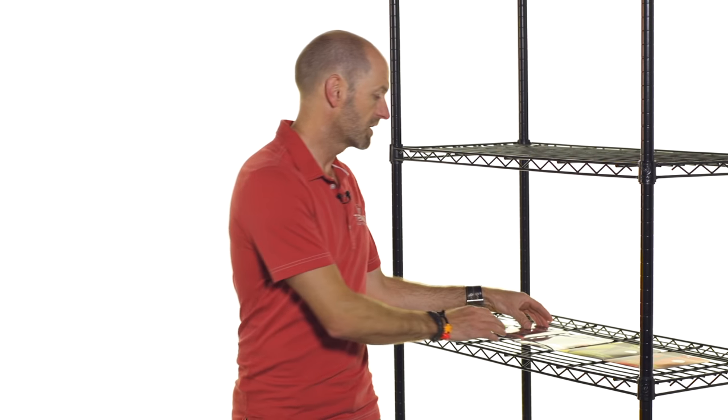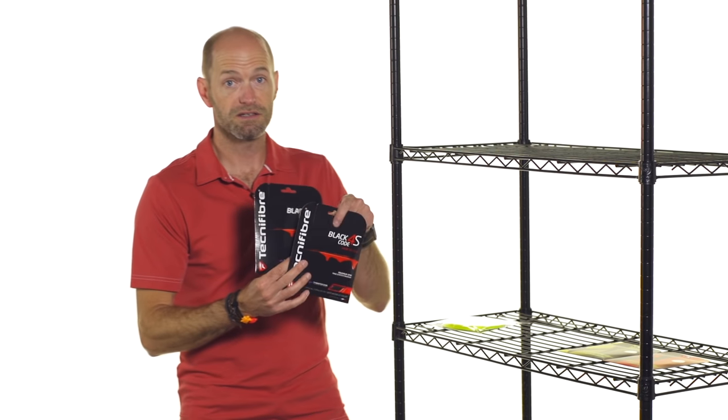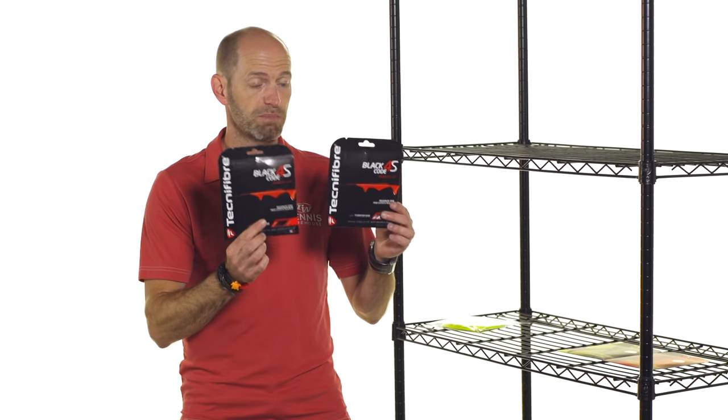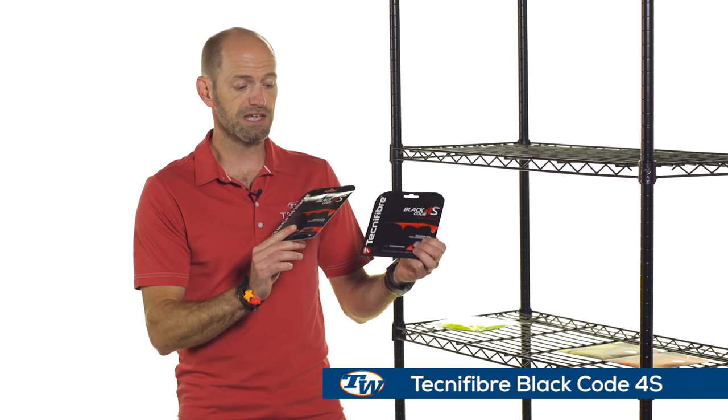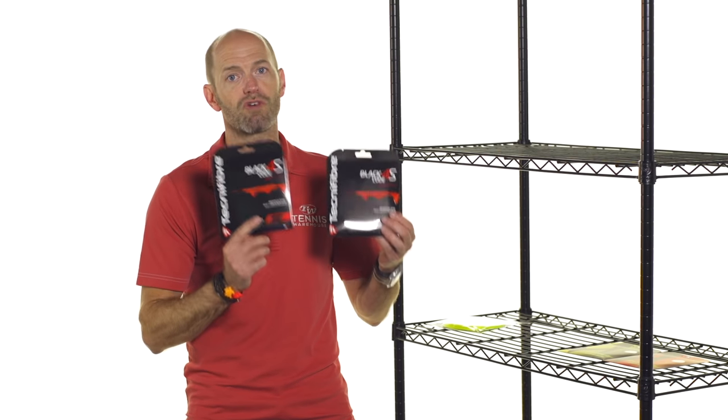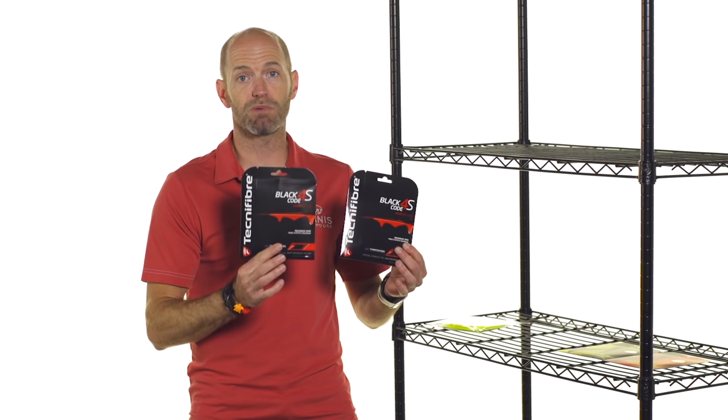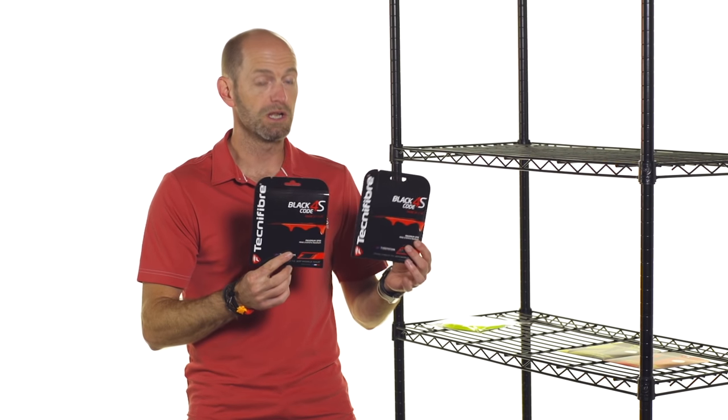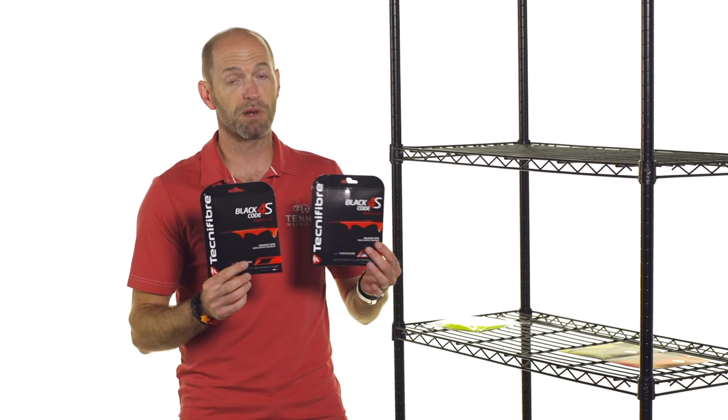Next up we've got two versions of Technofiber's Black Code 4S and these are the second and third place strings on our spin testing so far in the lab. The 17 gauge just edging out the 16 gauge for spin, but both of these strings offer great spin, great control, again nice firm response, really going to connect you to the ball.